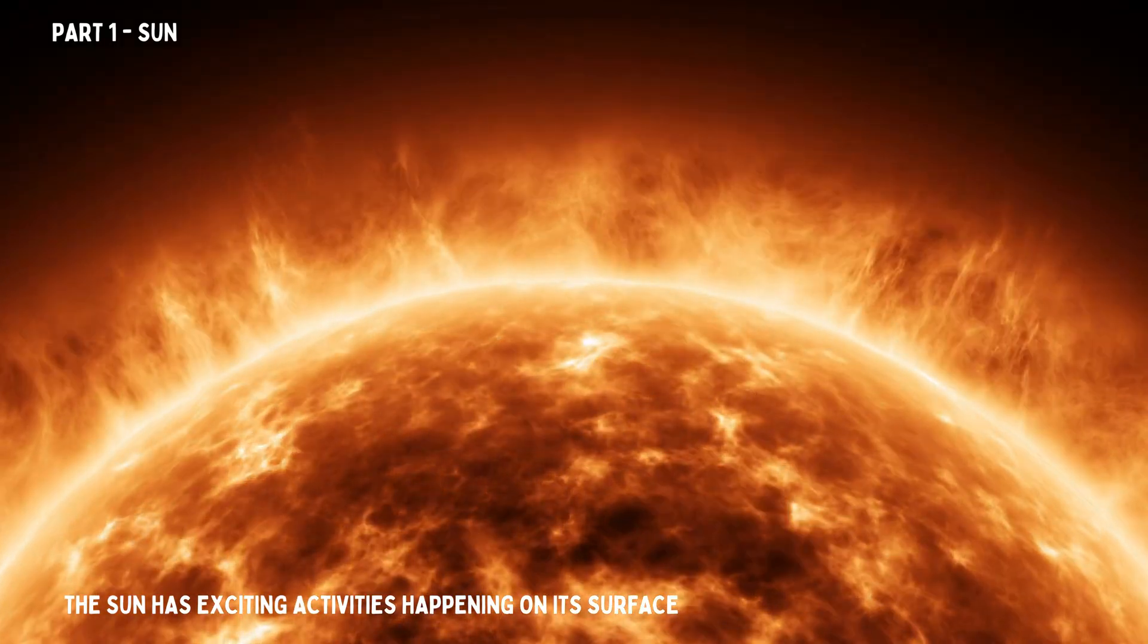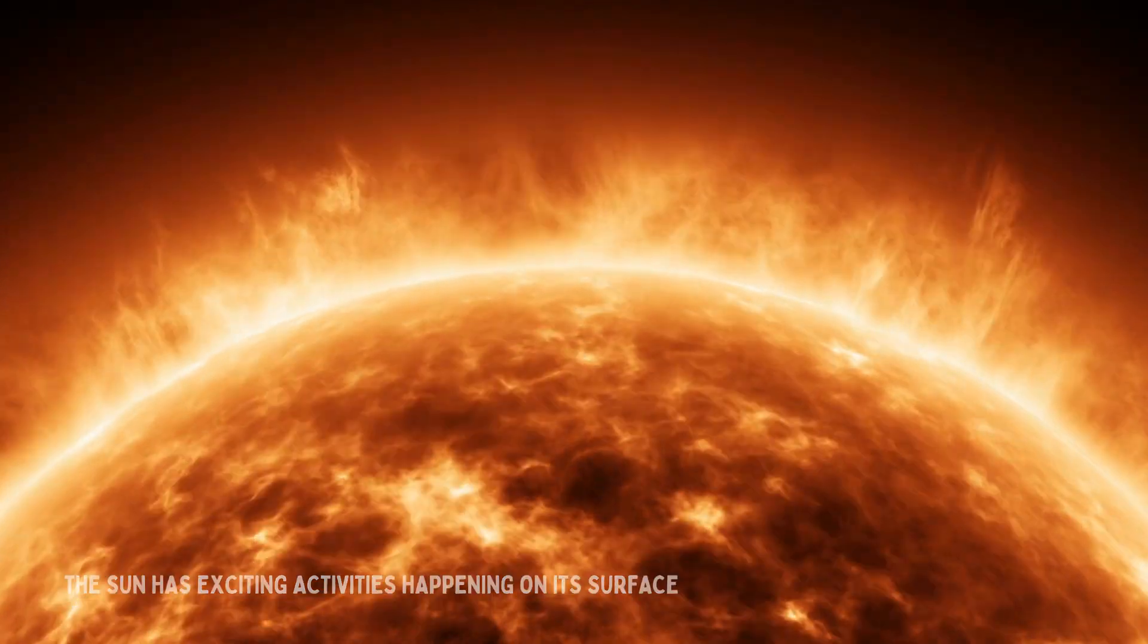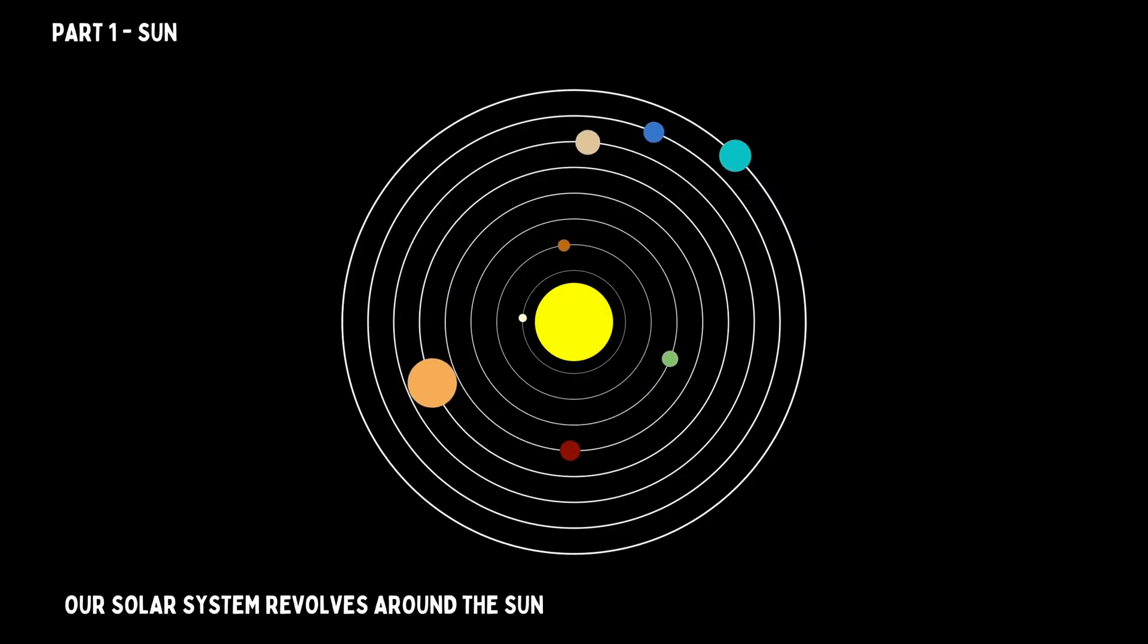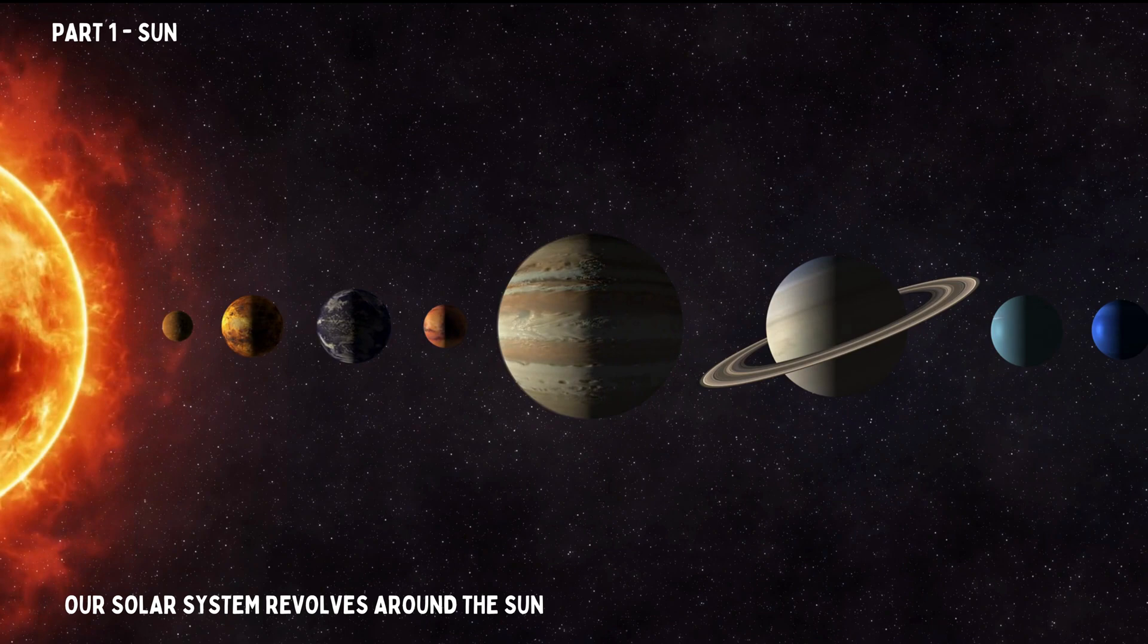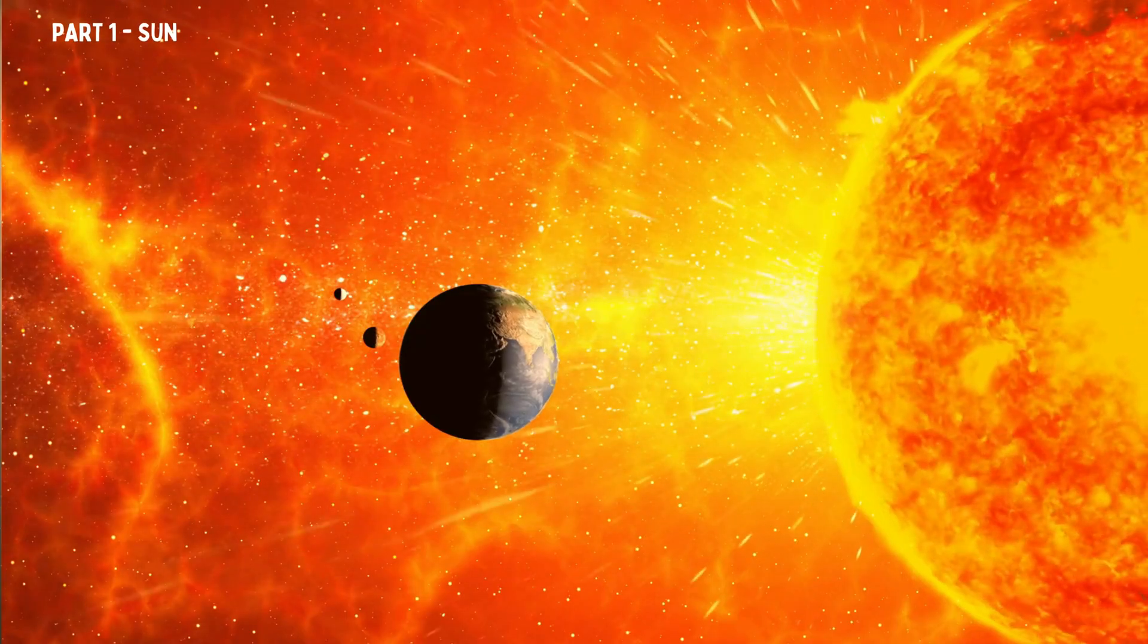Our solar system revolves around the sun. It sits at the center, and all the planets, including Jupiter, orbit around it, just like how the Earth orbits the sun.